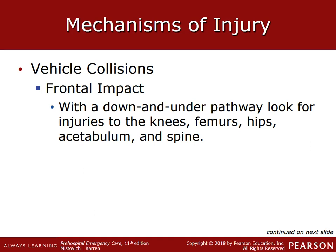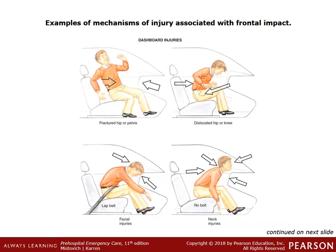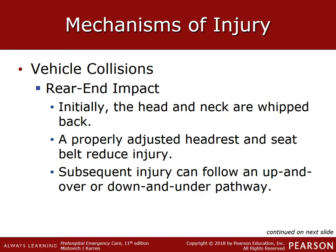The driver who goes down and under the steering wheel is subject to injuries to the knees, femurs, hips, and pelvis — those are the points of impact of a down-and-under. Compression to the femur can cause it to snap, or if the femur doesn't snap, that energy is transferred to the hip bone, which can cause it to break. Frontal impacts can result in fractured hip or pelvis, dislocated hip or knee, neck injuries, and facial injuries.